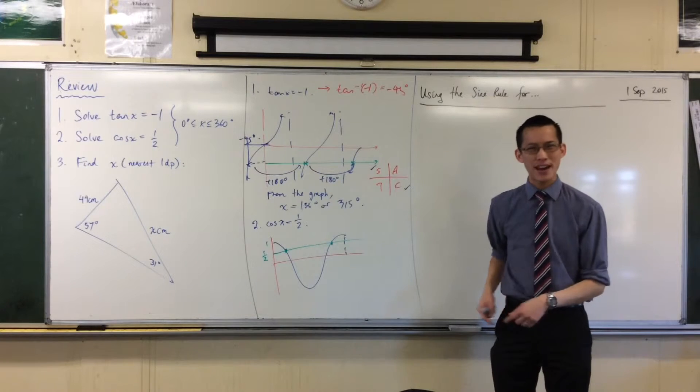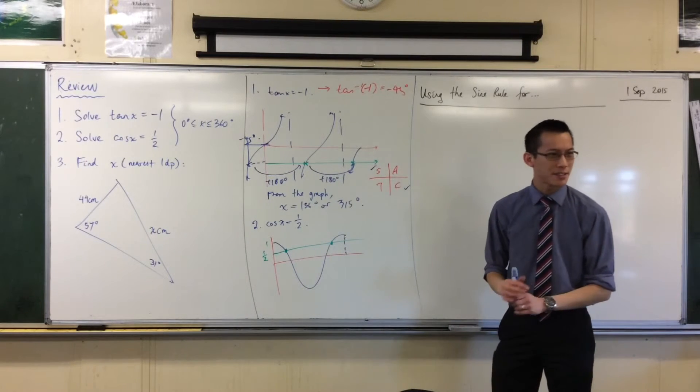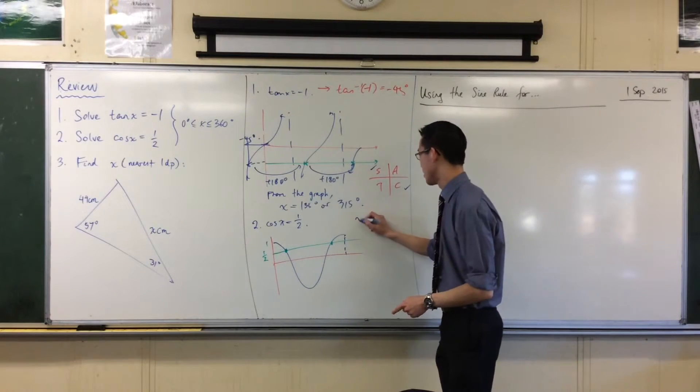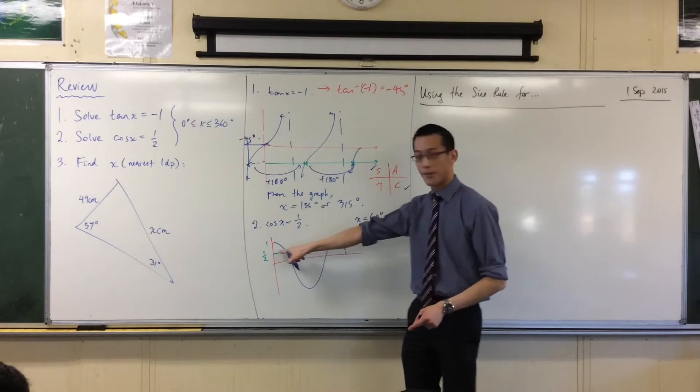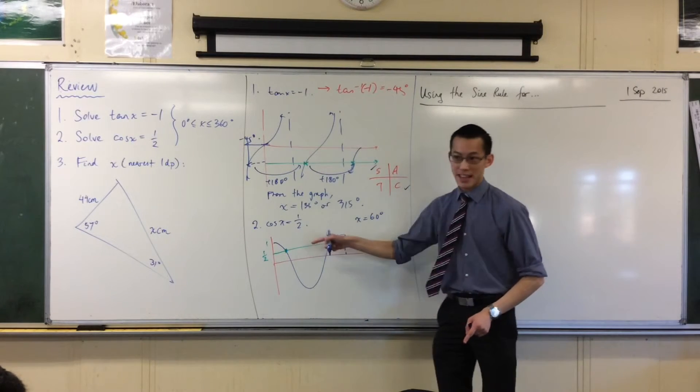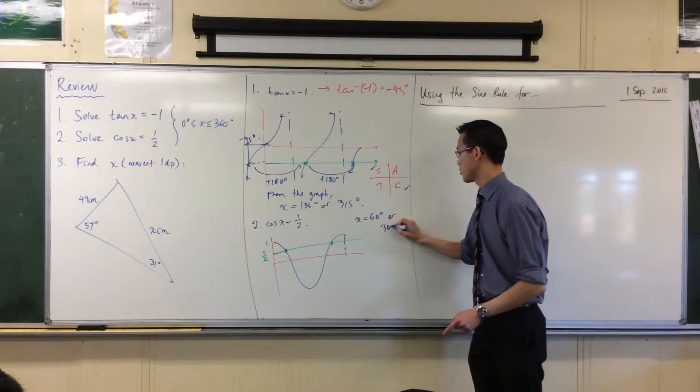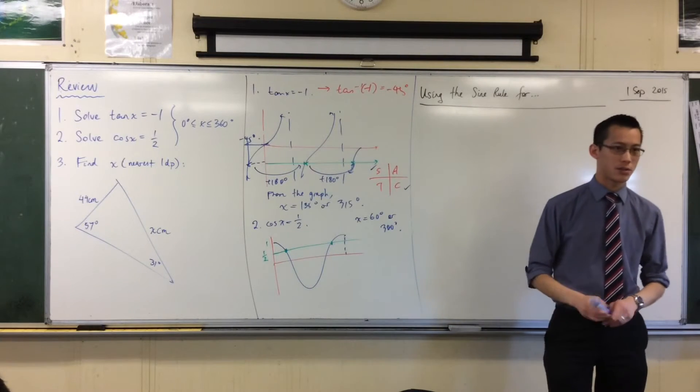Cos x equals a half, that's an exact value. Has anyone learnt it by now? Has anyone memorized it? It's 60 degrees, very good. So I can say that's got to be the first one. And the fourth quadrant one is 60 degrees that way. So it must be 300. Bam, I'm done. No quadrants required.